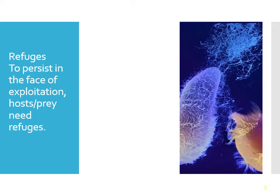We talked about predator-prey models and some of the experiments that were done, such as Gauss's experiment with paramecium and bacteria. A lot of the times these experiments didn't go well, and we don't often hear about experiments that don't go well. Often the predators would eat all the prey, and in a confined area they don't have anywhere to hide. Once the prey are extinct, the predators starve to death. You need refuges of various types to persist in the space of exploitation — the prey, or the host of the parasite, are going to need some sort of refuge.